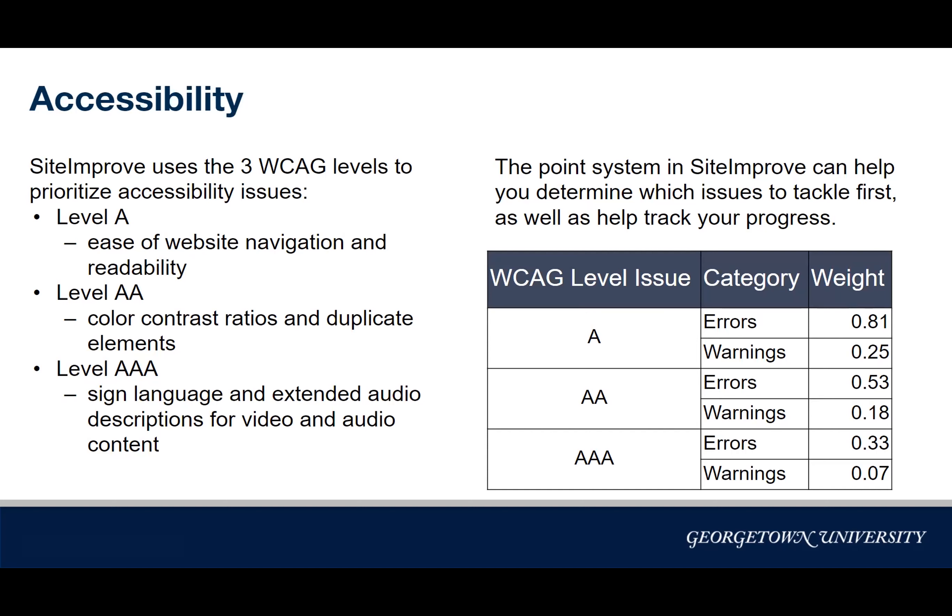Moving on to accessibility — I won't go too in-depth into individual accessibility issues since we have a course for that on Canvas, so I'll focus on how Siteimprove categorizes these issues. Siteimprove uses the three WCAG levels to prioritize issues. Level A is higher priority than AA, and AA is higher priority than AAA. Level A issues affect ease of navigation and readability, such as missing alternative text. AA covers contrast ratios and duplicate elements, and AAA deals with sign language and audio descriptions. The majority of issues you'll see fall under Level A and AA.